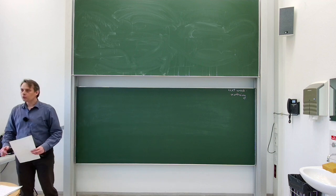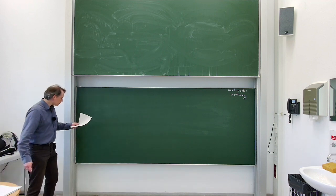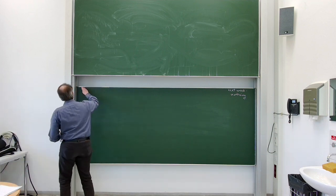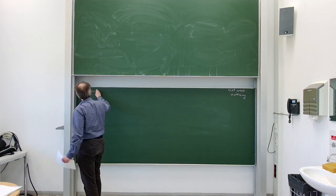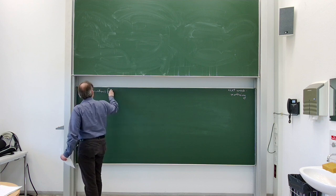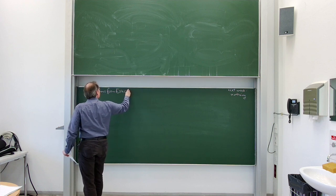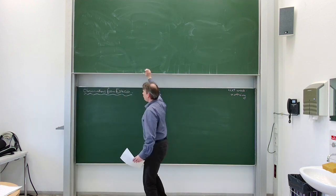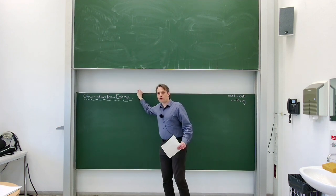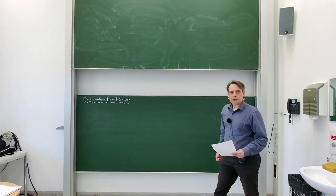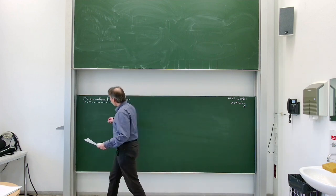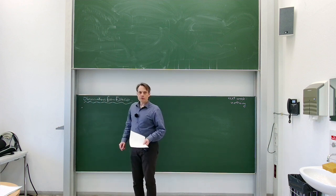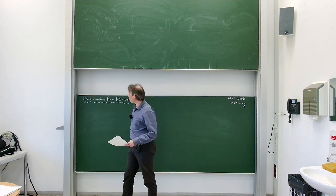Welcome back to our EFT lecture. Let us begin by writing down some observations from our exercise sheet. You have all done very well on the exercise sheet on basic Feynman diagram construction and Feynman diagram calculations, and three observations which are important for the rest of our semester are as follows.